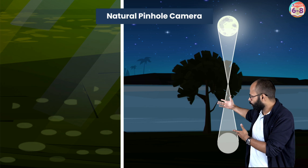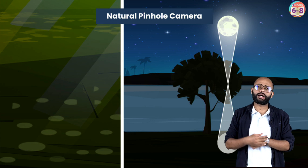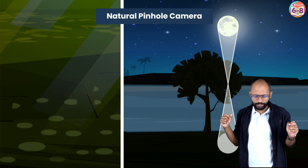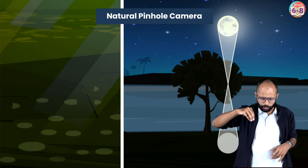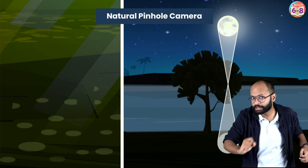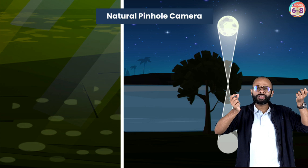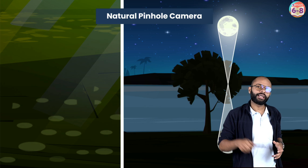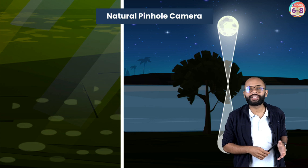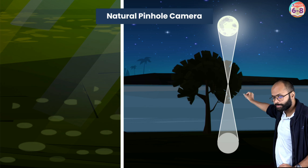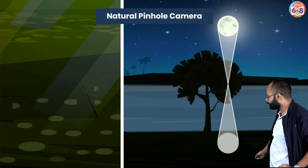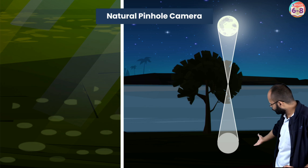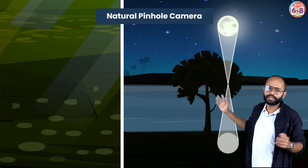The pinhole camera we saw was something we made ourselves. But we have natural pinhole cameras also. If you are roaming near trees and look at the floor under the tree, you will see small circular dots. That is actually the image of the sun. Even though the gaps between tree leaves have very irregular shapes, the shadow you get is a complete small image of the sun. Those small holes between tree leaves work like pinhole cameras - it's a natural pinhole camera. The floor is working like a screen.